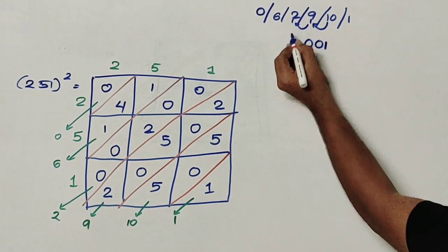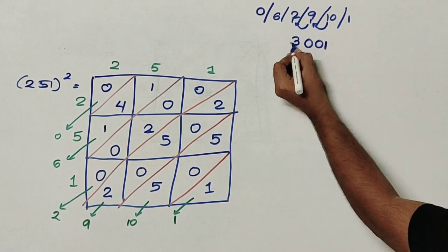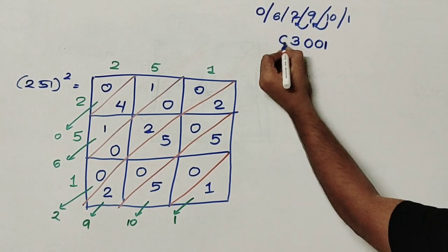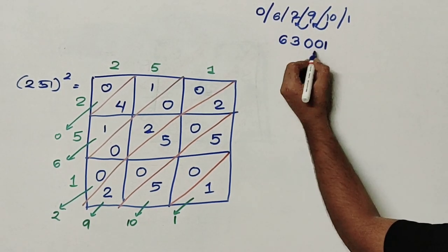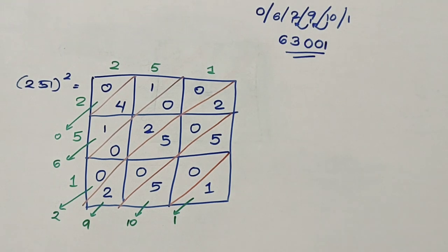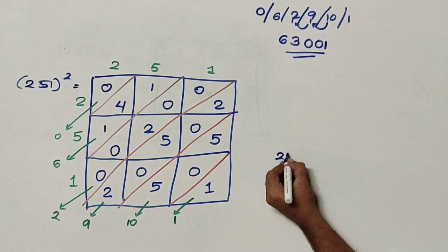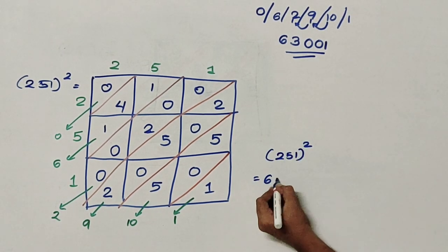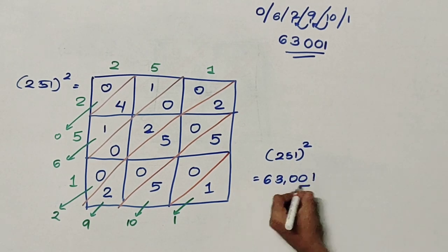Again carry forward. 2 plus 1 becomes 3. And 6. So this is my answer. 251 square becomes 63001.